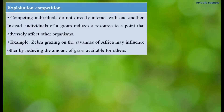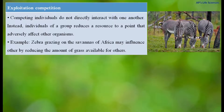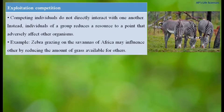Another type is exploitation competition, where competing individuals do not directly interact with each other. Instead, individuals of a group reduce resources to a point that adversely affects other organisms. For example, zebras grazing on the savannahs of Africa reduce the amount of grass available for other species or individuals. There is no direct competition between the individuals.